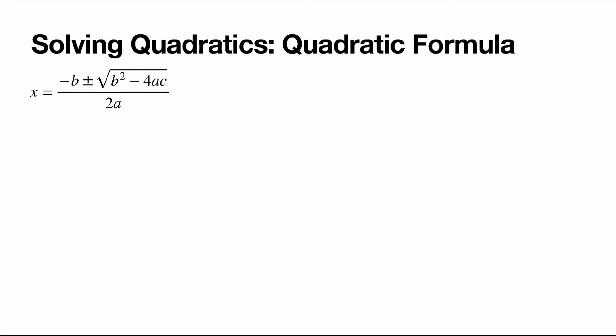In this video, we will be talking about the third method for solving quadratics, which uses the quadratic formula. The quadratic formula involves substituting values from our quadratic equation into this formula: x equals negative b plus or minus the square root of b squared minus 4ac, all divided by 2a.